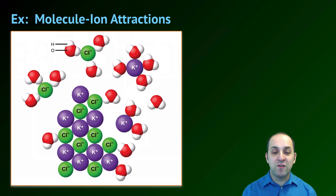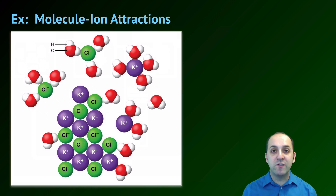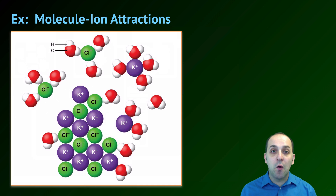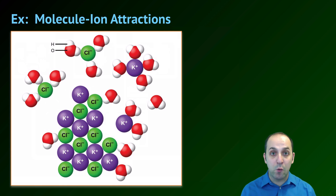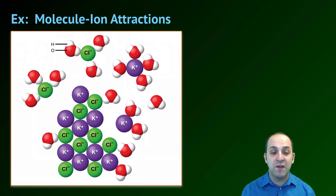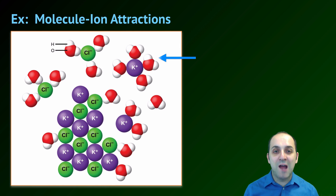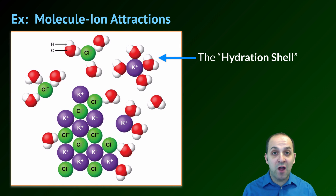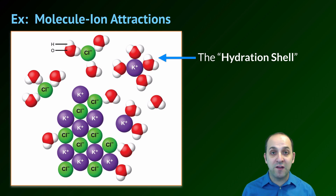When considering solutions, there are a variety of interesting intermolecular attractive forces that take place. A very common example is what's known as molecule-ion attractions, as shown in this diagram. This diagram shows a particle of solid potassium chloride interacting with water molecules in an aqueous solution. Notice that the negatively charged oxygen poles of the water molecules wind up interacting with the positively charged potassium ions, and the positively charged hydrogen poles wind up interacting with the negatively charged chloride ions. The result is what's commonly referred to as a hydration shell — a covering of water molecules surrounding the individual ions and helping to keep those ions in solution.